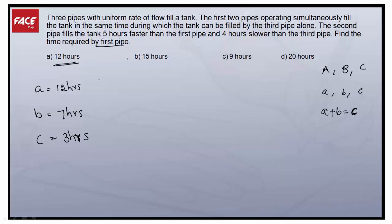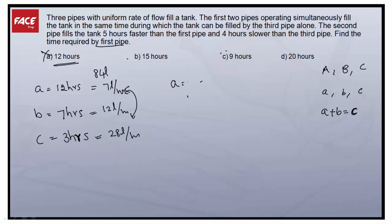Now we check whether the combined efficiency of pipes A and B equals pipe C. Taking the LCM, which is 84 liters: pipe A fills 7 liters per hour, pipe B fills 12 liters per hour, pipe C fills 28 liters per hour. Since 7 plus 12 is nowhere near 28, the answer cannot be Option A.